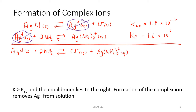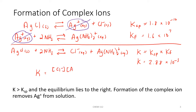To calculate the new K for the overall equation, we multiply Ksp times K sub F. When we add equations together, we multiply their individual equilibrium constants. The K sub F from our chart equals 1.6 × 10⁷, so our new K equals 2.88 × 10⁻³. We then write the equilibrium expression: K equals the concentration of chloride times the concentration of the complex ion, all over the concentration of ammonia squared — because ammonia has a coefficient of 2 — and we do not include solid silver chloride.